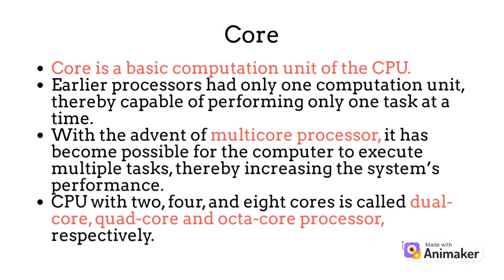Moving on to core. Core is a basic computation unit of the CPU. Earlier processors had only one computation unit, thereby capable of performing only one task at a time. With the advent of multi-core processors, it has become possible for the computer to execute multiple tasks, thereby increasing the system's performance. CPUs with two, four, and eight cores are called dual-core, quad-core, and octa-core processors, respectively.